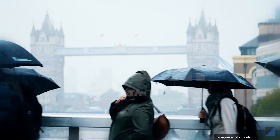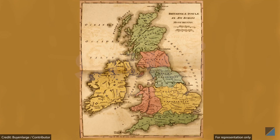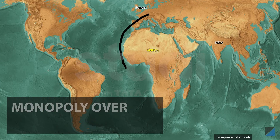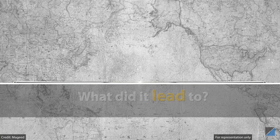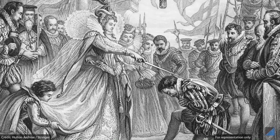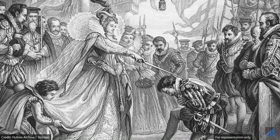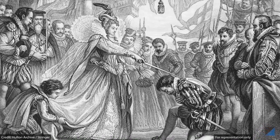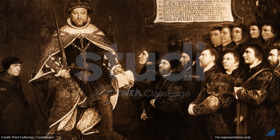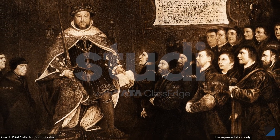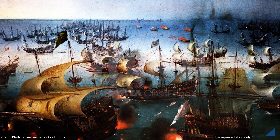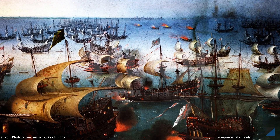A somewhat similar situation had occurred around 300 years ago in Britain, where the East India Company sought favors from its government to have a monopoly over trade with India. It all started in 1600 CE, when the East India Company acquired permission from the Queen of England to be the sole trading company in the East. The Royal Permission managed to remove competition from other British companies, but not that of European companies, who were equally interested in trade with Asia and Africa.